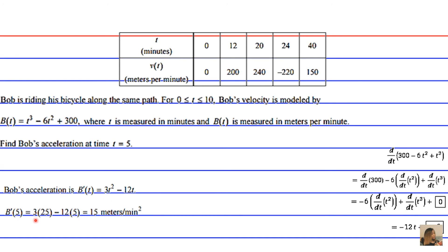And if we plug in five, we get three times five squared, which is 25, minus 12 times five, and that's 75 minus 60, which is going to give us 15 meters per minute squared.